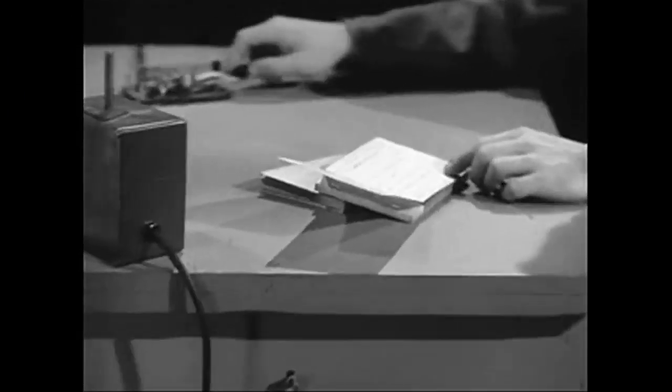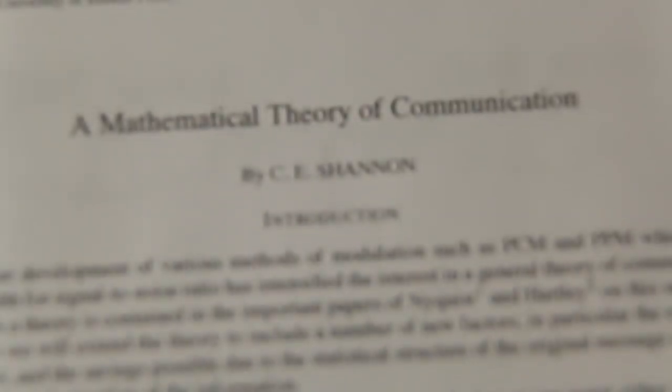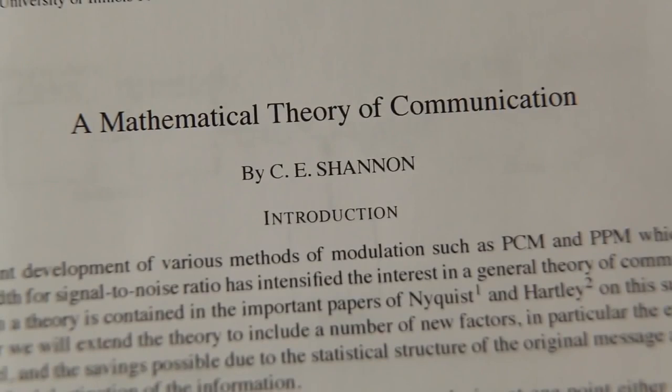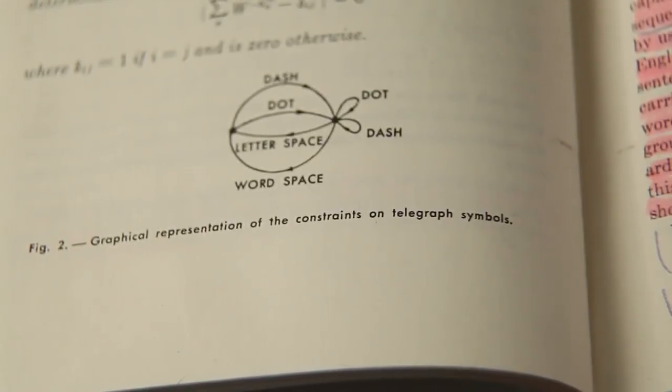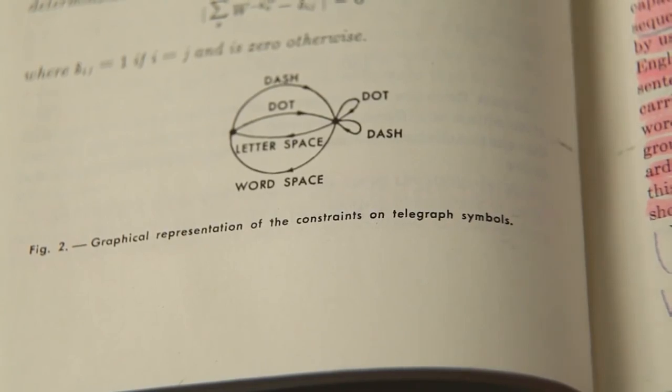In 1949, he published a groundbreaking paper, A Mathematical Theory of Communication. In it, he uses Markov models as the basis for how we can think about communication, starting with a toy example.